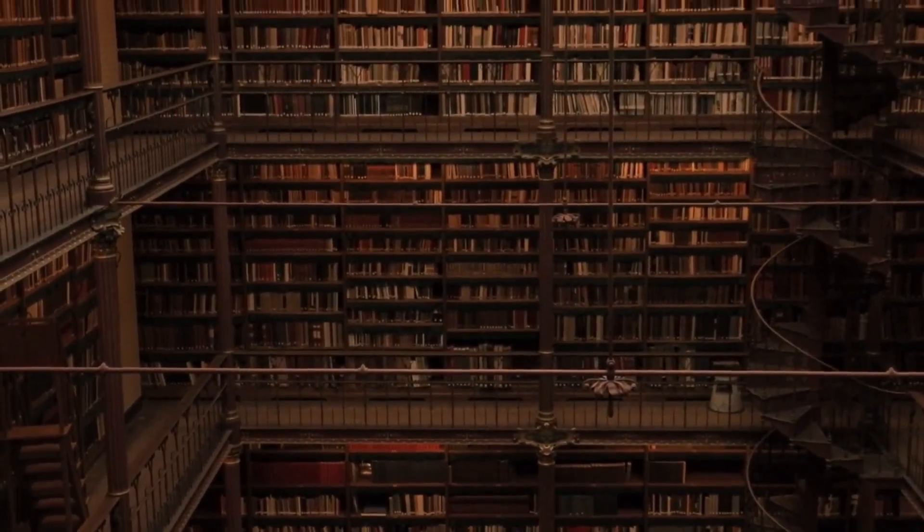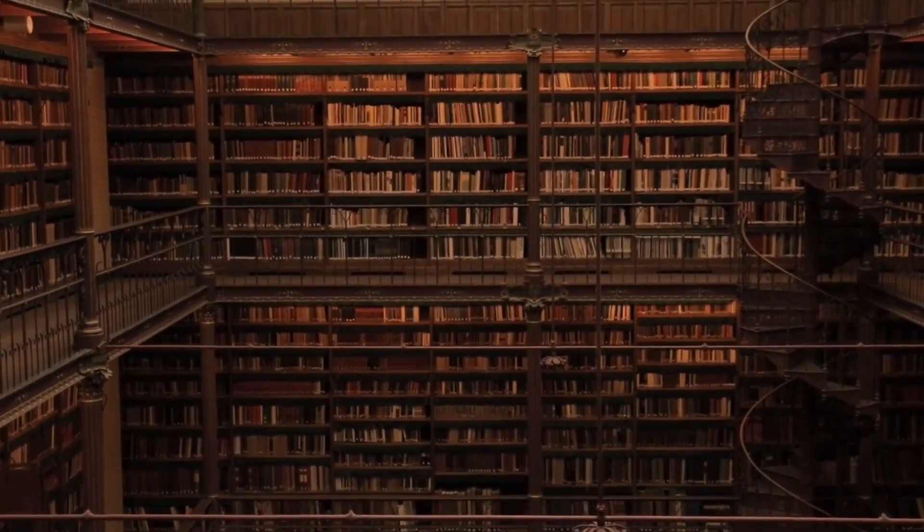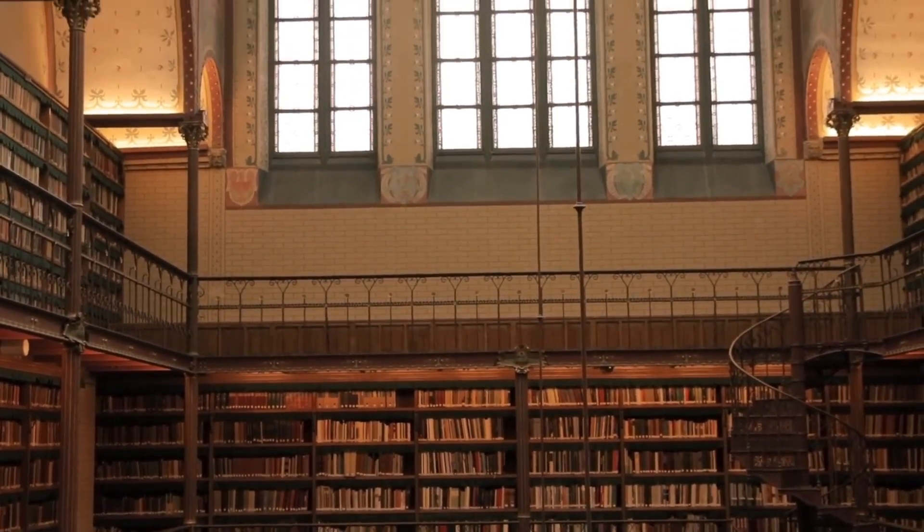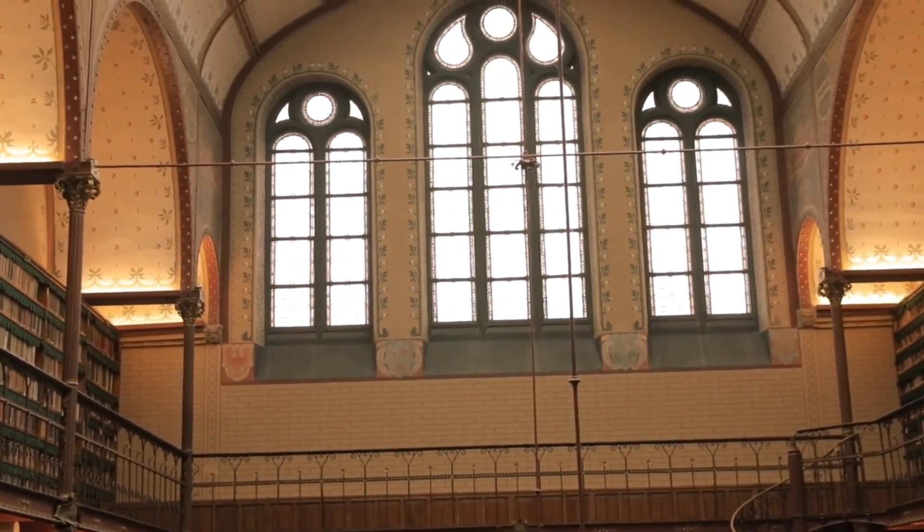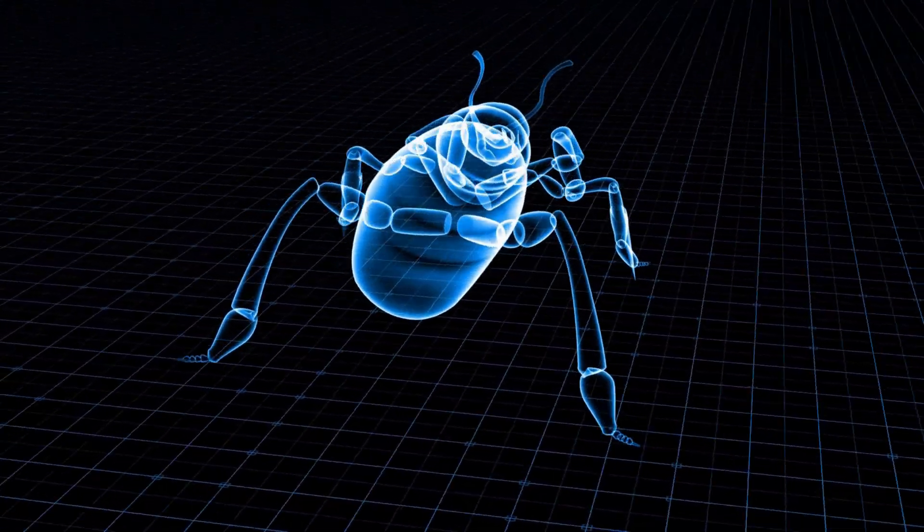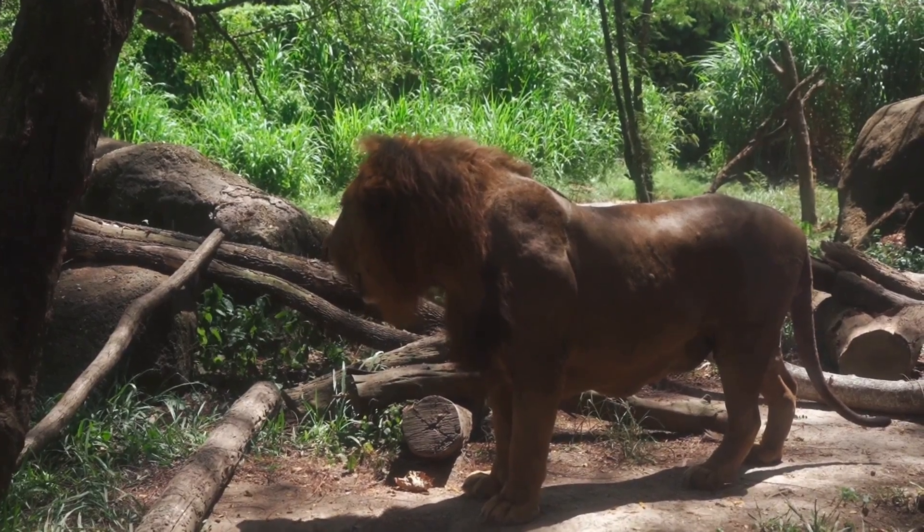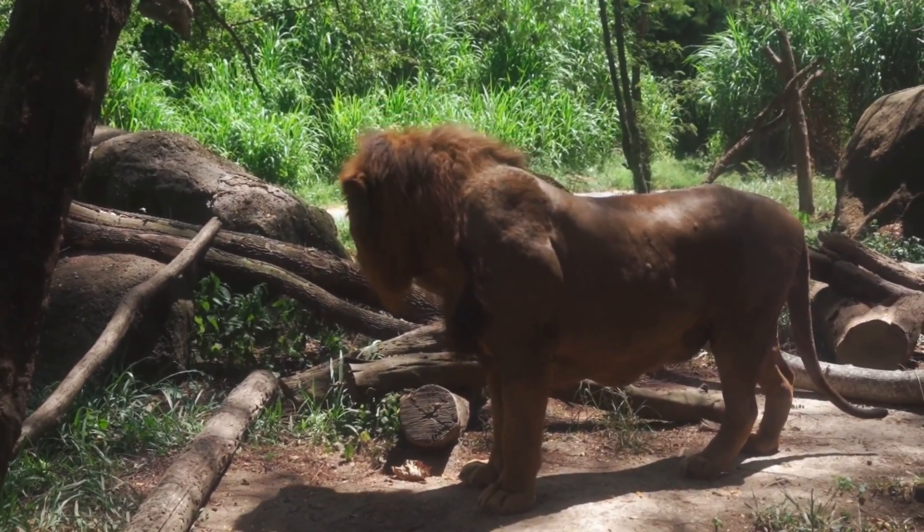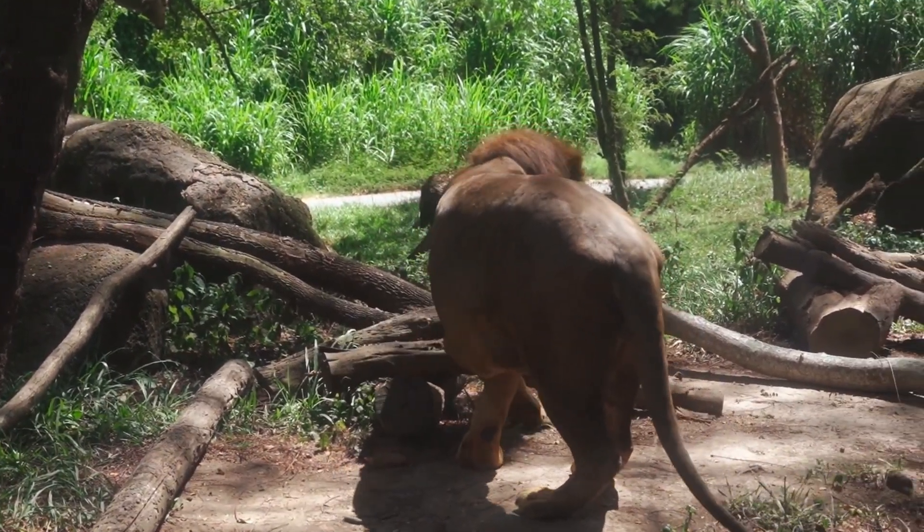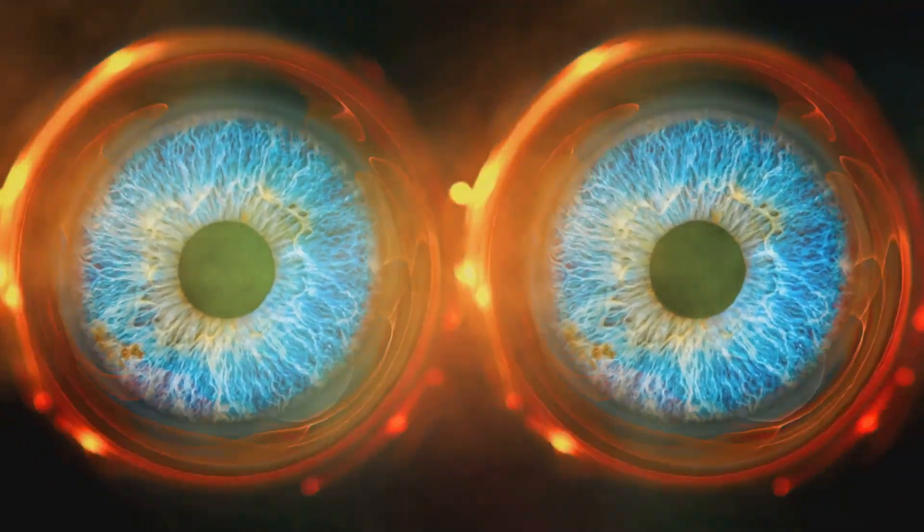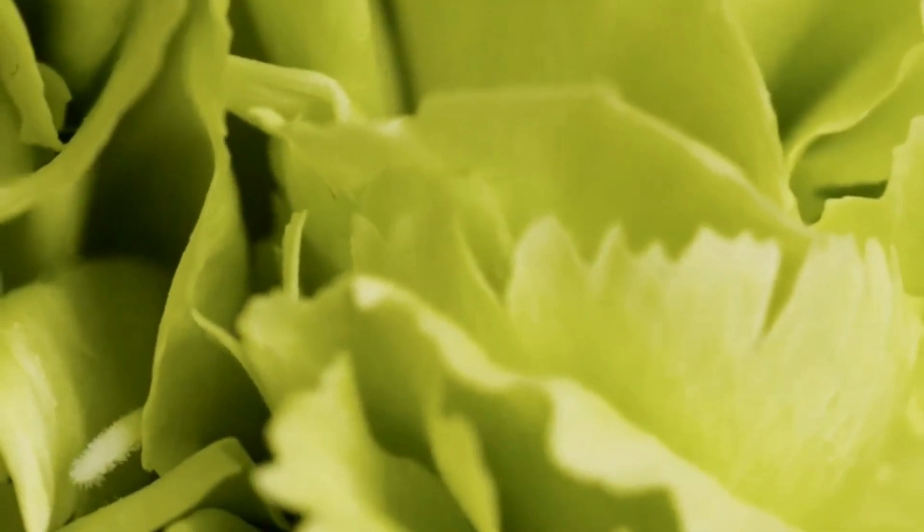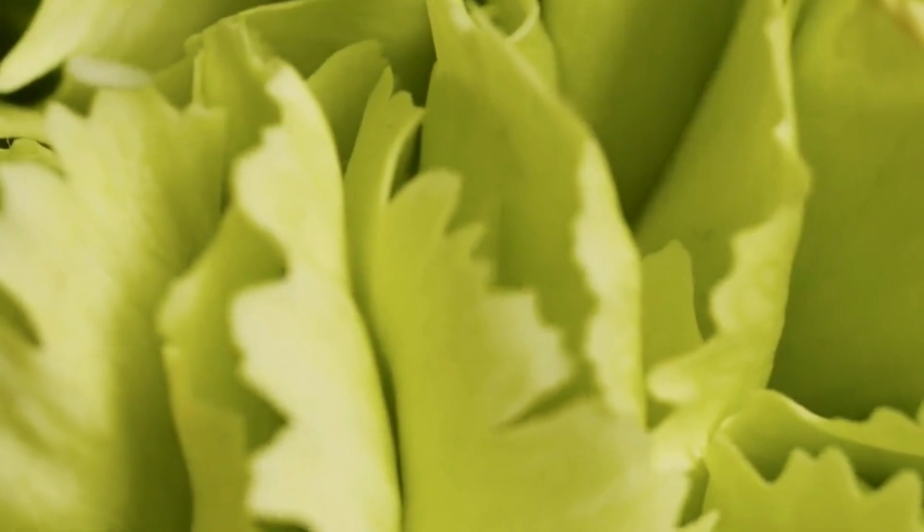Imagine a vast and sprawling library containing within its walls all the accumulated knowledge of the world, every story ever told, every scientific discovery ever made, all meticulously organized and shrunk down to fit inside the microscopic confines of a single cell. That, in essence, is DNA, a compact and incredibly efficient storage system for the information that governs life. Each book within this cellular library is a gene, a discrete unit of heredity, holding the specific instructions required for building and maintaining the various parts of an organism. These instructions determine traits like the color of your eyes or the intricate and varied shapes of leaves, each perfectly adapted to its environment.